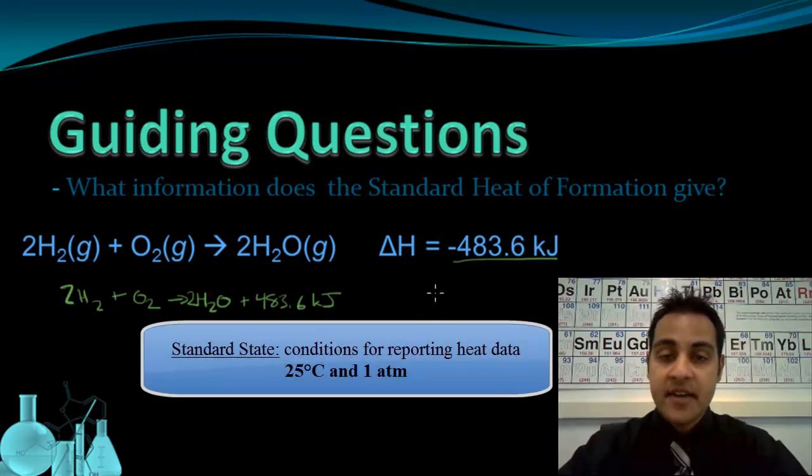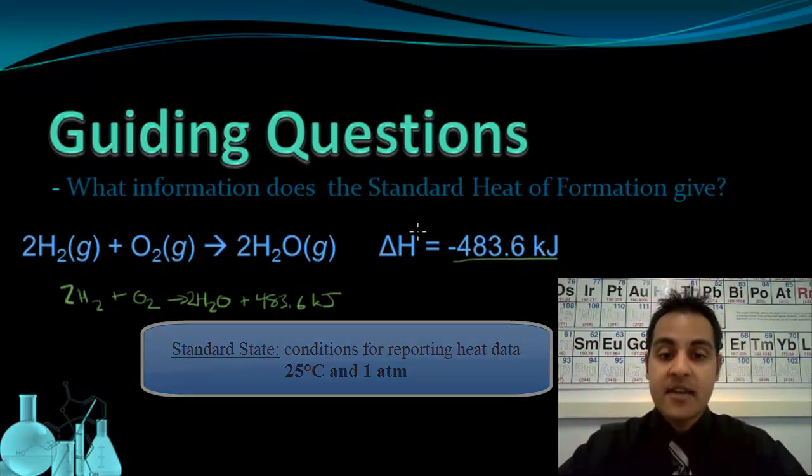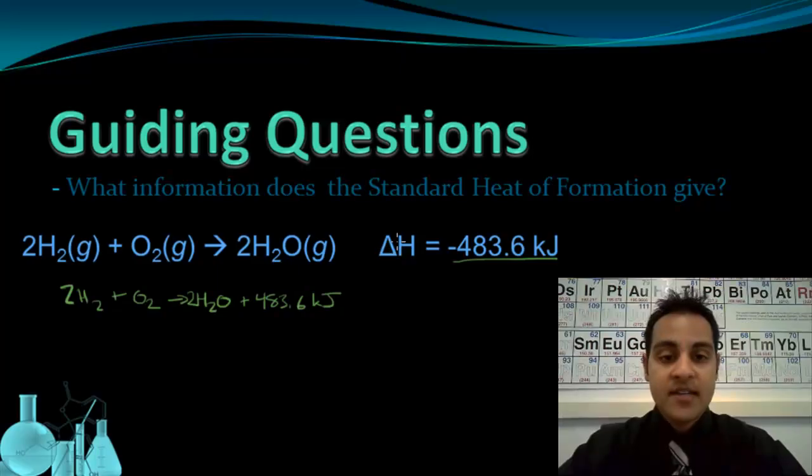The standard state for heat data is 25 degrees Celsius and one atmosphere pressure. When the heat data is reported at this standard state we put a little notation next to the delta H that looks like this. This little symbol tells us that this reaction is at the standard state, 25 degrees Celsius and one atmosphere pressure.